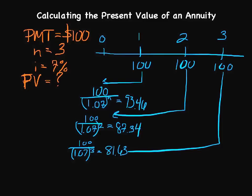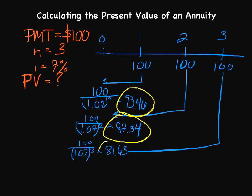If we take those three numbers that we had identified before—93.46, 87.34, and 81.63—and if we add those together, we actually get $262.43.